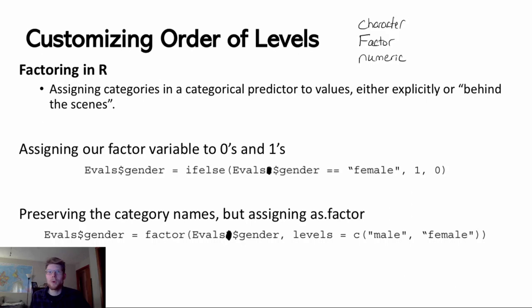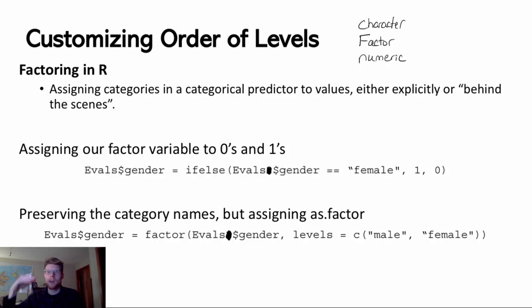Character variables are the default whenever you have letters in a particular variable. If some of the entries are letters, R naturally assumes that's a character variable where there isn't an inherent hierarchy or structure of those categories — they're just separate equal categories. Whereas factoring means to have some assignment of hierarchy, with an underlying assignment of 0s, 1s, 2s, and 3s to different categories. When building a model and assigning a variable as a dummy variable, we'll need to change that variable to be a factor variable.